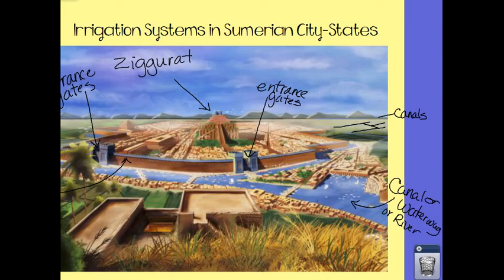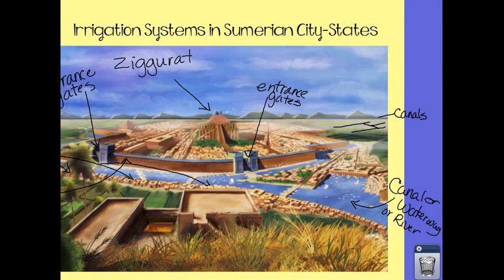All right, so we have: mud brick wall, entrance gate, ziggurat, canals and waterway. Now, these little houses right here — no, it's not the city state. It is mud brick houses. What's their purpose? It is for civilization — they are mud brick houses for farmers.